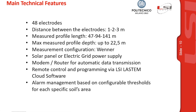Here is a list of the main technical features of the device. The number of electrodes is fixed at 48, and the distance between electrodes can vary from 1 to 3 meters. According to this distance, the profile length varies from 47 to 141 meters. The maximum measured profile depth also varies with electrode distance, reaching a maximum of 22.5 meters using 3-meter electrode spacing. The measurement configuration is the Wenner, and the system can be charged by solar panel or electric grid. A modem or router enables automatic data transmission to LSI Lastem's remote-controlled cloud software, where it is also possible to program the system and set alarms based on configurable thresholds of resistivity variation.